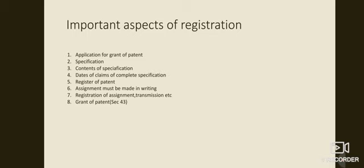Moving to the next slide, the important aspects of registration. First one: application for grant of patent. Always one patent is for a single invention. There are three types of persons entitled to make application for the patent: the inventor, the inventor's assignee, and the legal representative of the deceased inventor.